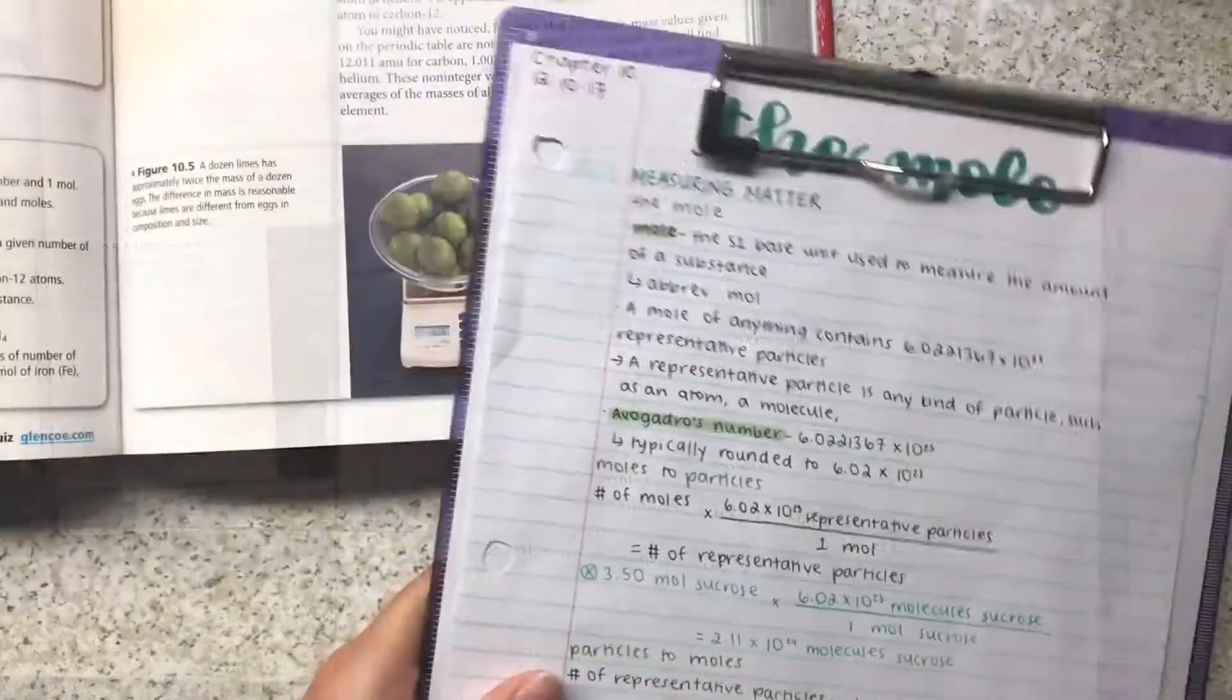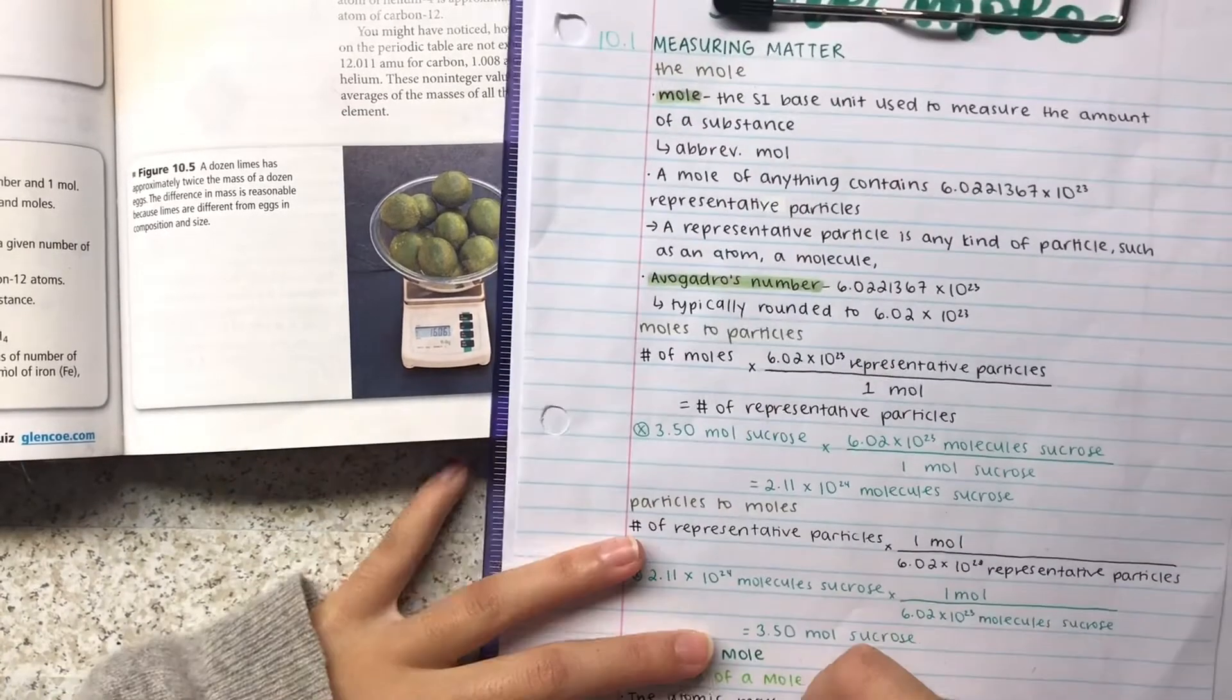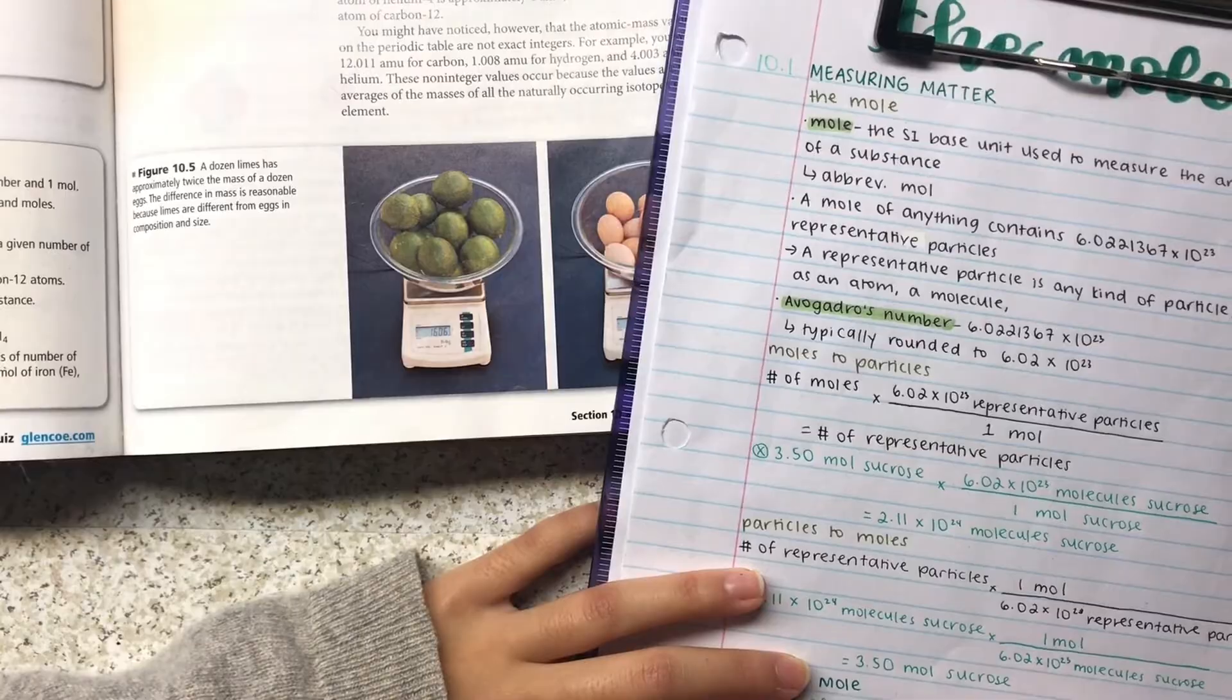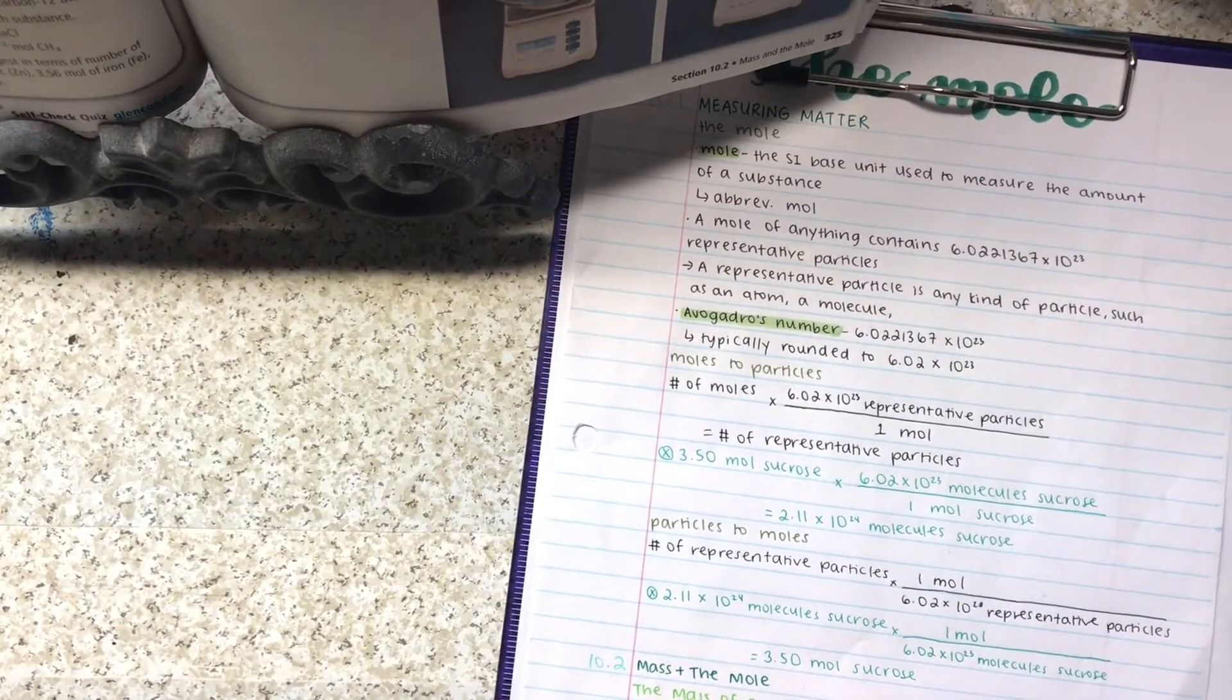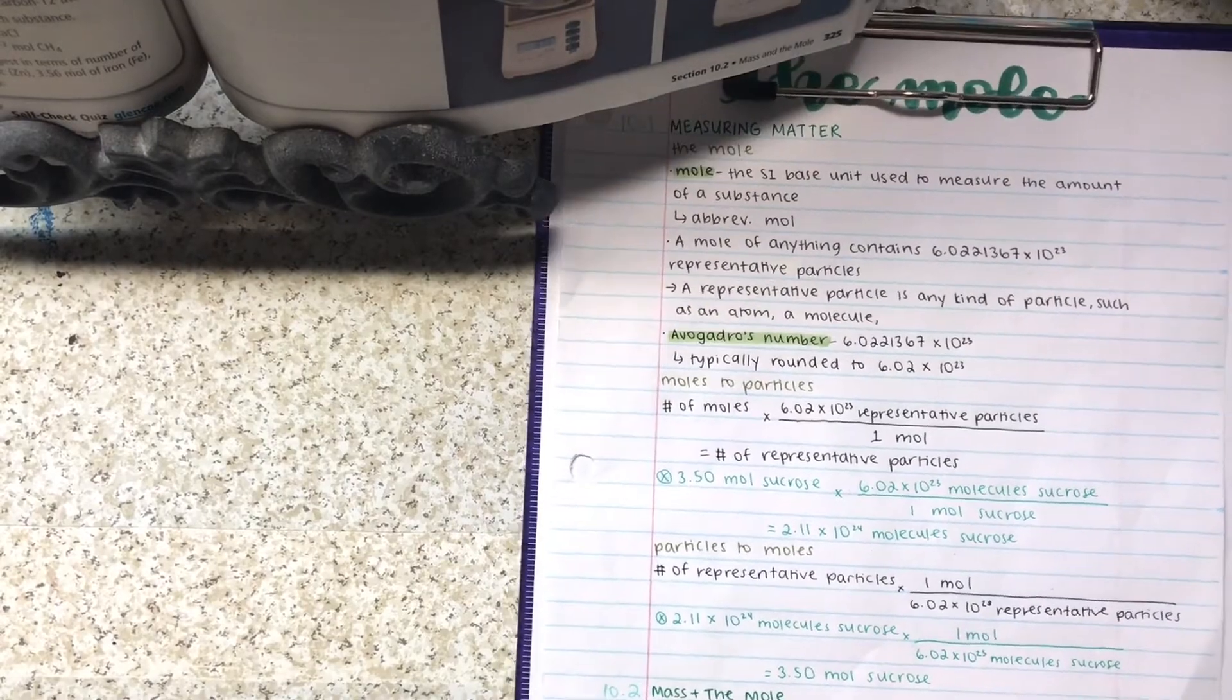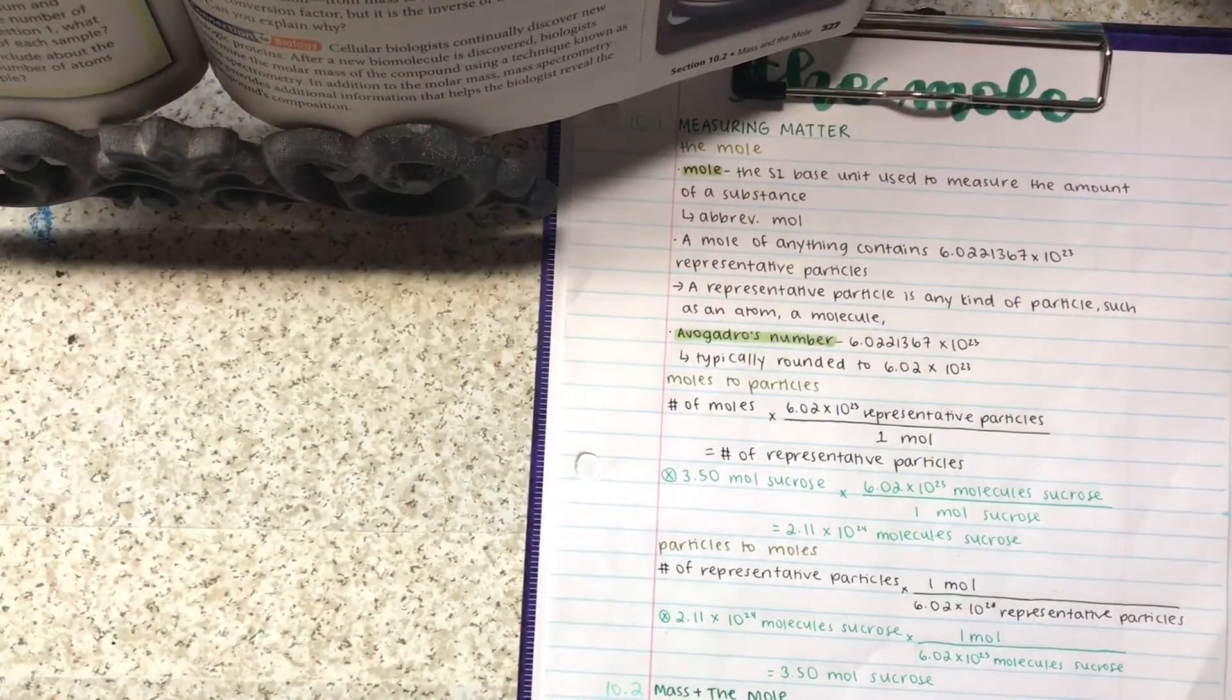And I also used Staedtler Triplus Fineliners for the headers. So for the big main subtopic sections I used the dark green, and for smaller topic headings I used lighter shades of green.